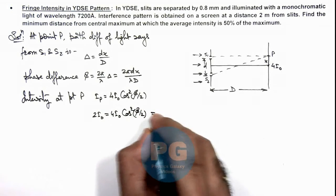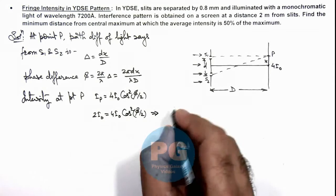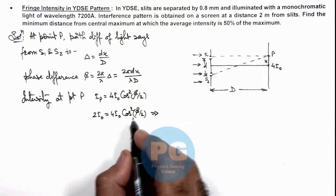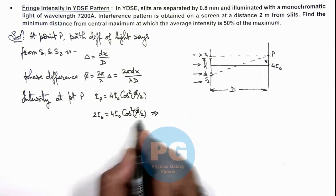So here if we analyze the value we are getting here is cos(φ/2) is 1/2.